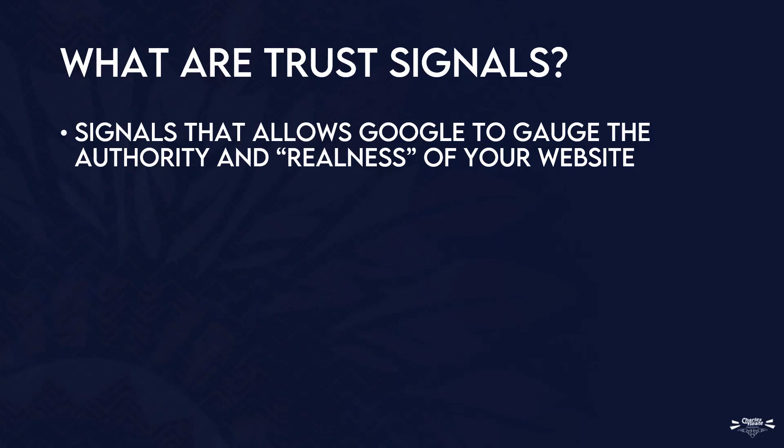Trust signals are the way that Google looks at a website and validates its authenticity, making sure it's a completely real website. It gets more and more important depending on the keywords you're using — specifically transactional or YMYL (Your Money Your Life) topics like healthcare, insurance, or finances and loans.